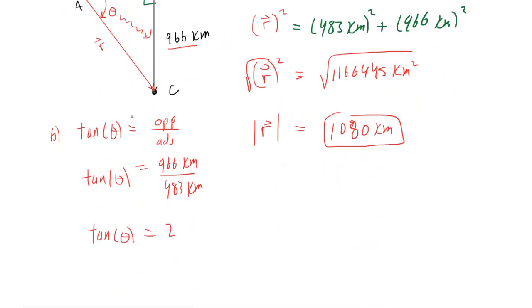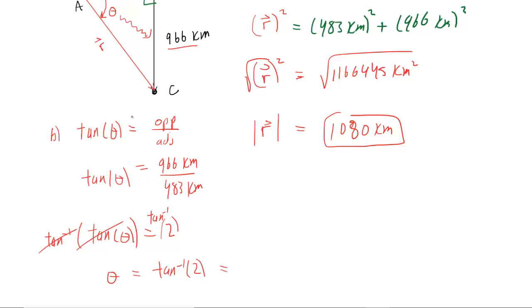To solve for theta, you take the inverse tangent on both sides. The inverse tangent and the tangent cancel each other out, giving theta equals the inverse tangent of 2. Punching that into your calculator in degree mode, you get about 63.4 degrees.